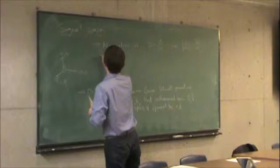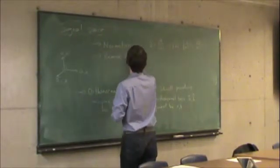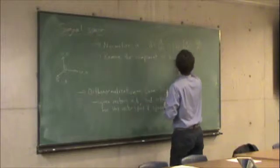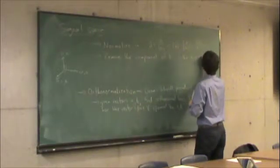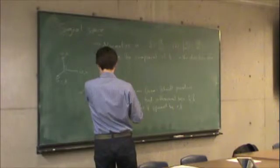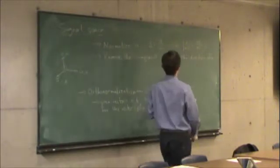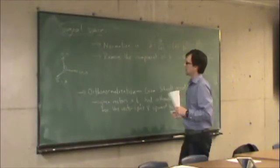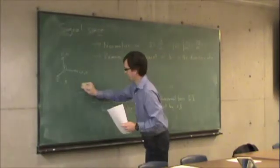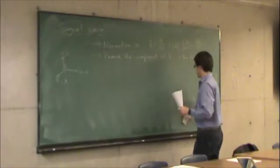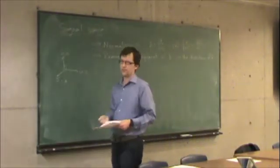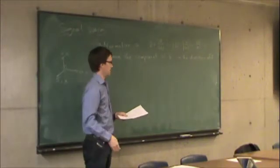The second thing we do is remove a component of B in the direction of A. What's the component of B in the direction of A hat? How do I find that? B dot A hat.